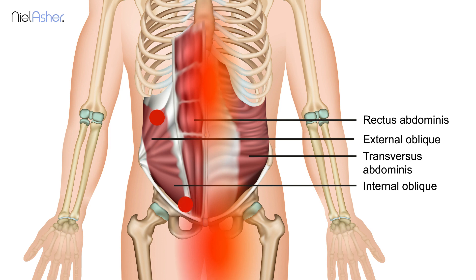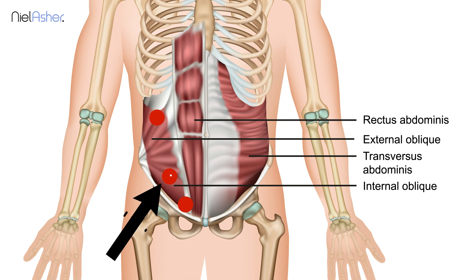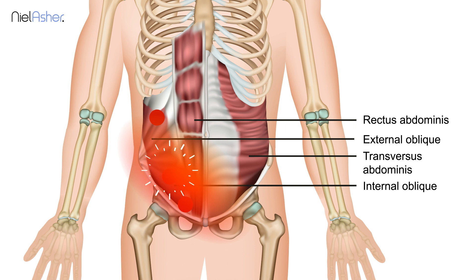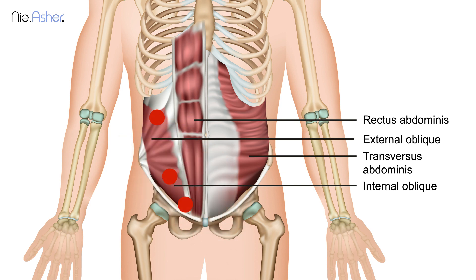There's one quite close to it, slightly higher, which refers pain out into the lower iliac fossa — the lower outer part of the tummy. This is, in medical terms, called McBurney's point, which is the area that gives you pain in appendicitis. So again, you have to rule out appendicitis first. But if it turns out not to be appendicitis, you've had it all checked out and still have ongoing pain, then look for the trigger point.